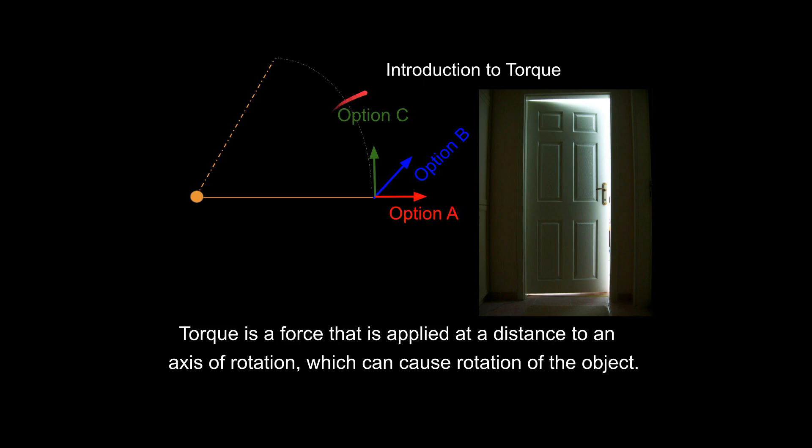To answer my first question, option C is going to have the greatest torque value, and option A is going to have the least. In fact, option A is going to have no torque value whatsoever. This force has no ability to rotate the door.